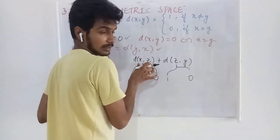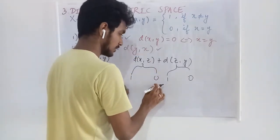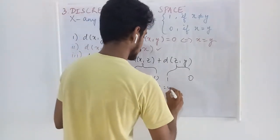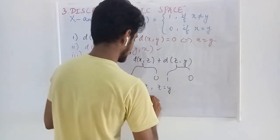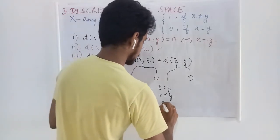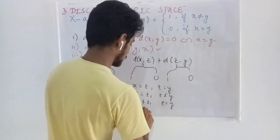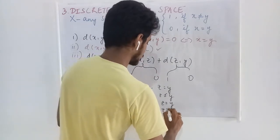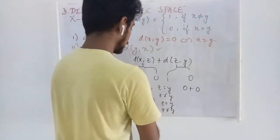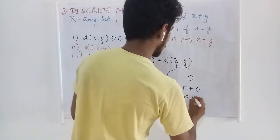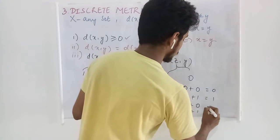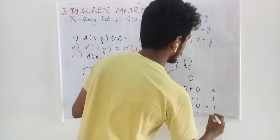If x and z are same, then we will have 0. That is what I am trying to say here. This is the first case. This is one case. This is the third case. And this is the fourth case. In this case, what will we get? We will get 0 + 0. In this case, we will get 0 + 1. In this case, we will get 1 + 0. In this case, we will get 1 + 1.